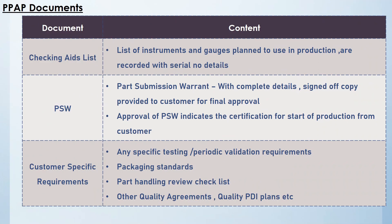The next document is the checking aids list. All instruments and gauges planned for use in the production process are listed and documented with serial numbers and calibration dates, serving as a reference for future audits and verifications.